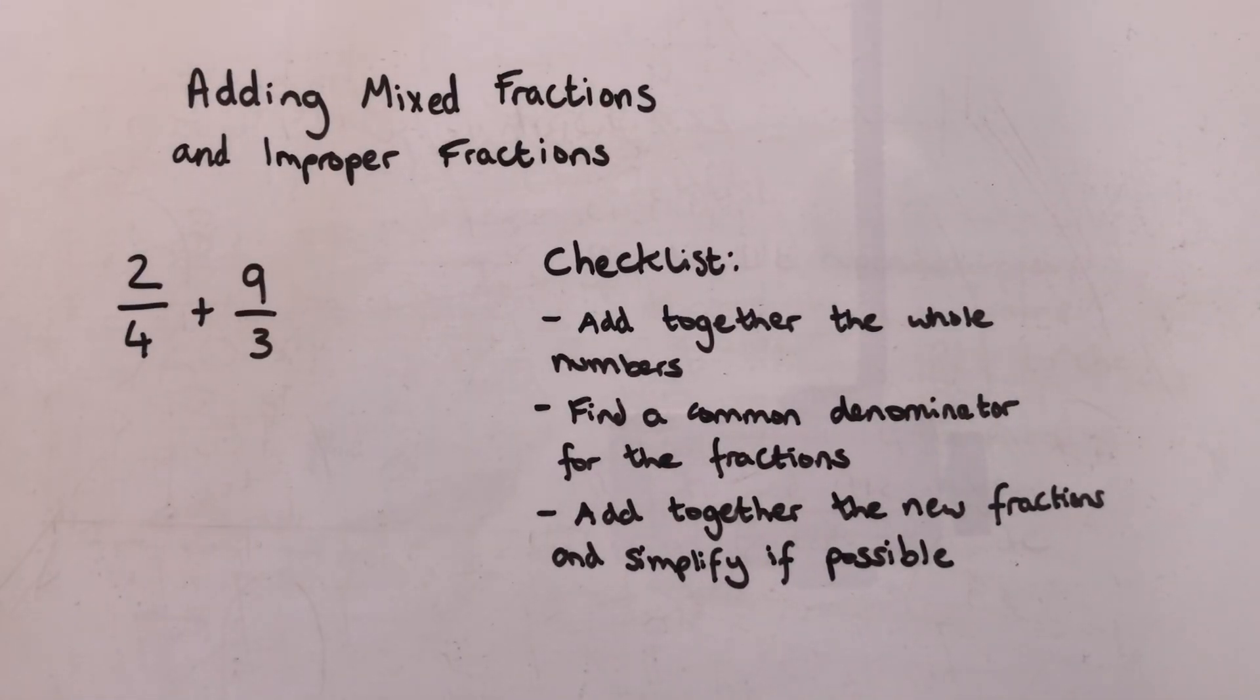In this video we're looking at adding mixed fractions and improper fractions. In this first example we're going to look at some improper fractions. So my checklist says add together any whole numbers, and there's no whole numbers in this example: two quarters plus nine thirds.